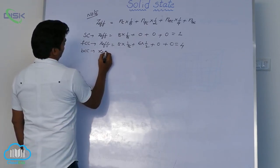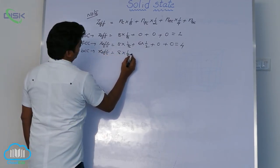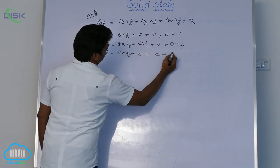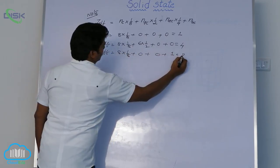Similarly, Z effective is 8 into 1 by 8 plus 0 plus 0 plus body centered atom 1. So Z is total 2.